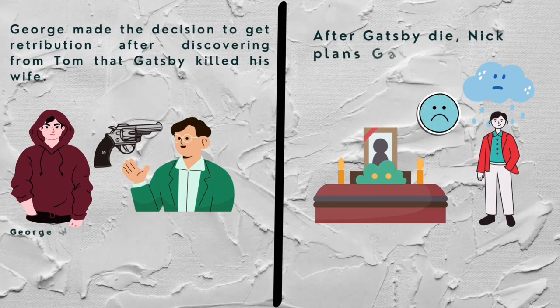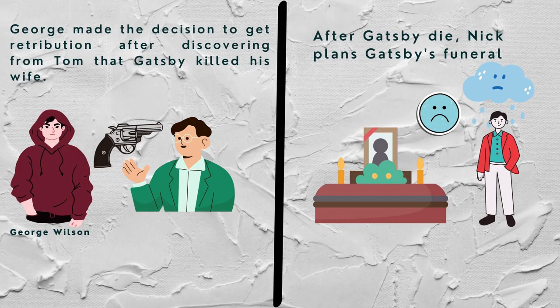George Wilson, Myrtle's husband, arrived in East Egg the following afternoon. Tom tells him that Gatsby killed his wife. Wilson visits Gatsby's home and shoots both the man and himself. After Tom's flight from Long Island, Nick plans Gatsby's funeral.